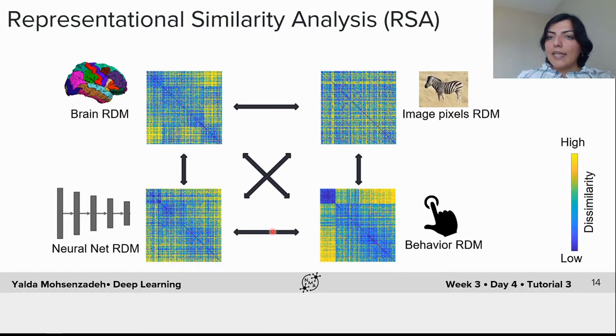Representational similarity analysis is a powerful method because it maps the data from different modalities to the common space where they can be directly compared and you can find their similarities.